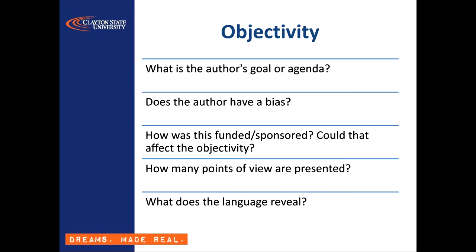When examining the objectivity of a source, you want to ask yourself what goal or agenda it might serve. Websites or articles that appear objective might, in fact, be cleverly disguised fronts for an advertised product. Even when this is not the case, it's important to understand that every author comes to an issue from a particular point of view, often with an intention to convince or influence the reader. Even science-based studies can serve an agenda — if a study is funded by a drug manufacturer, for example, the sponsor may choose not to submit it for publication if the findings are unfavorable. You can also deduce a lot from the language authors employ as to whether the work is trying to appeal to the reader's emotions rather than convincing the reader with facts and evidence.